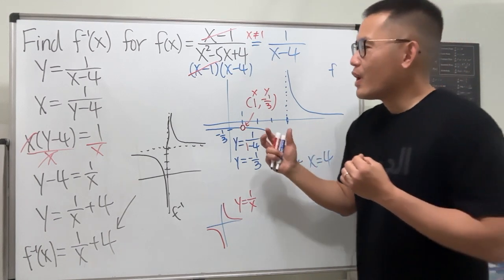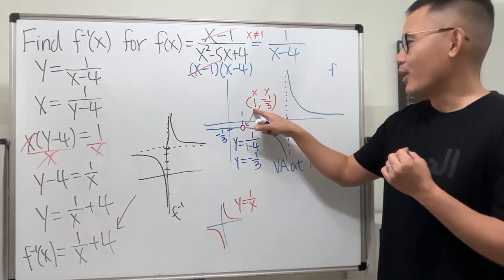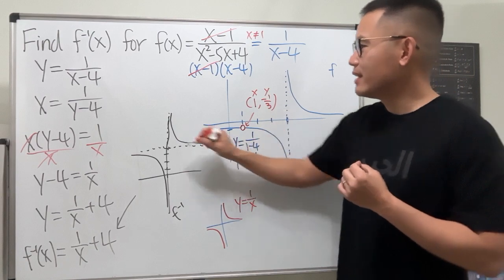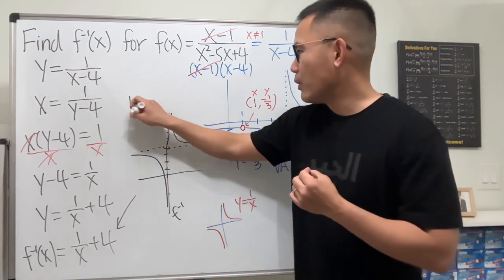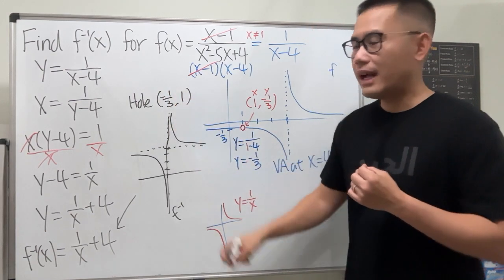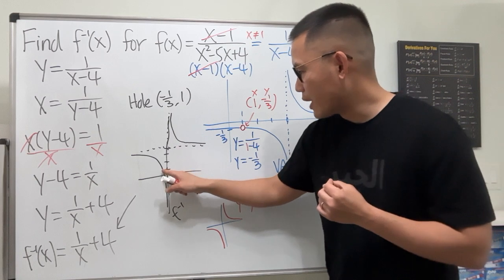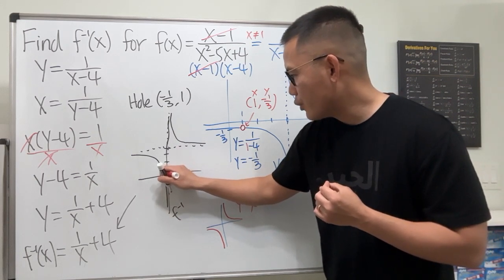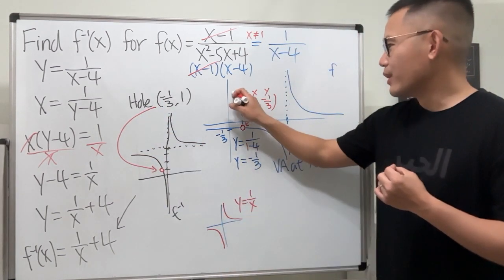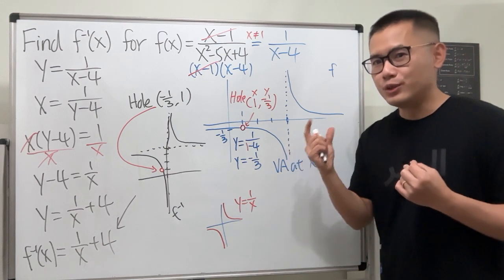When we take the inverse, the x and y are switched. If there was a hole at (1, negative one third) on the original, then on the inverse we should have a hole at (negative one third, 1). So on the inverse graph, we erase that point and put an open circle there.